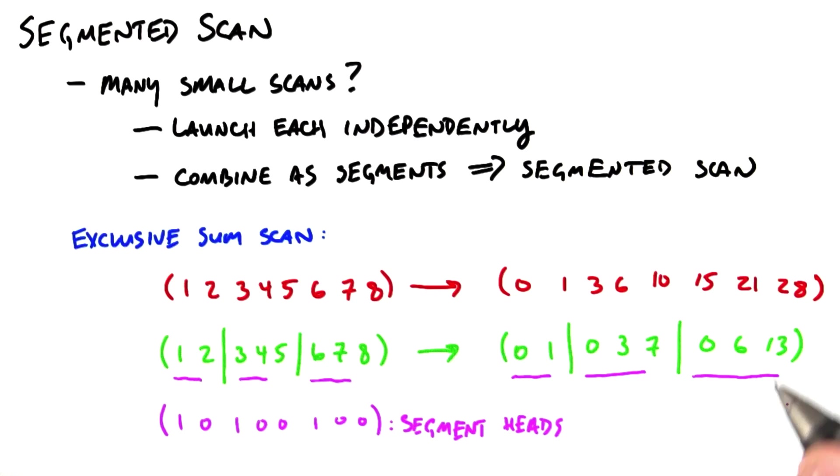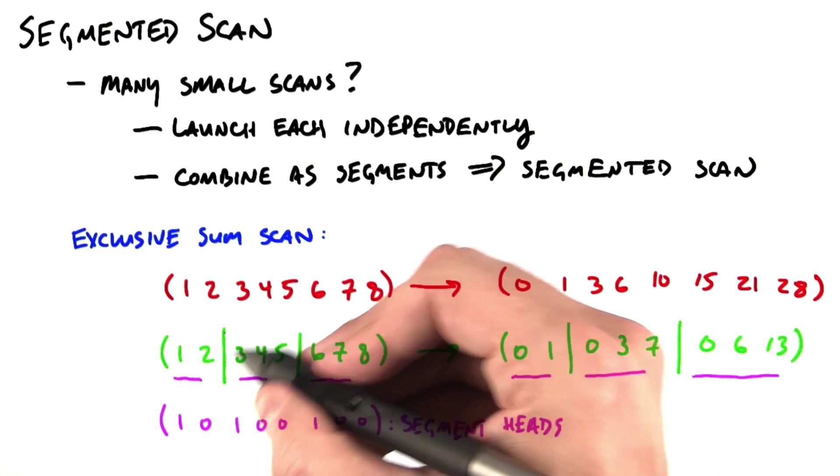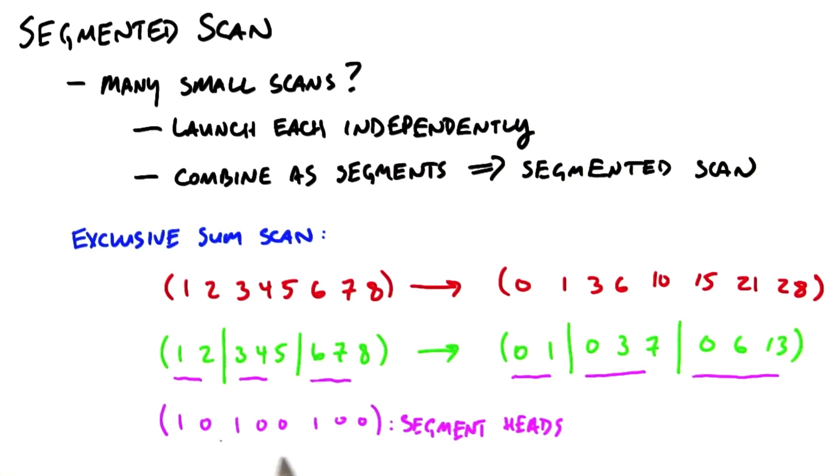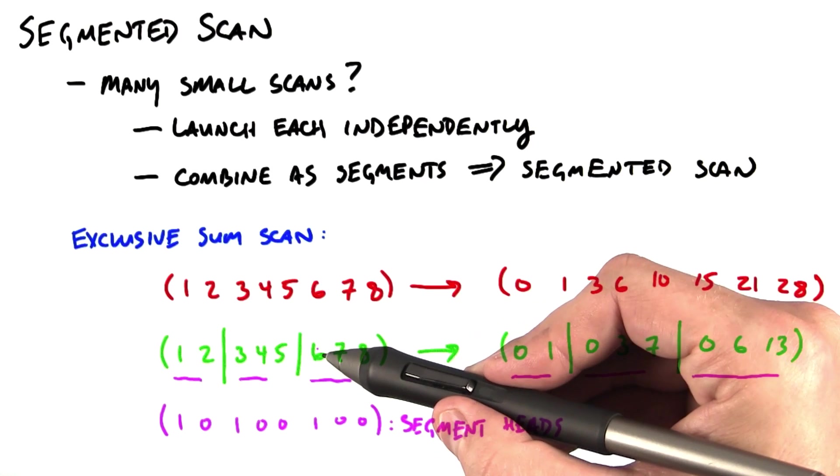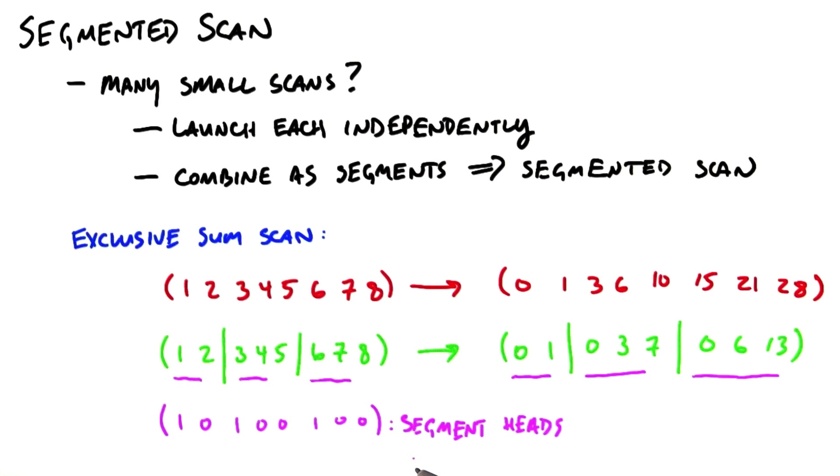And so the way that we're going to represent these segments is with segment heads so that we have a second array, the same length as the input array, that marks where segments begin. So a segment begins here with the number 1, a segment begins with the number 3, and a segment begins with the number 6.